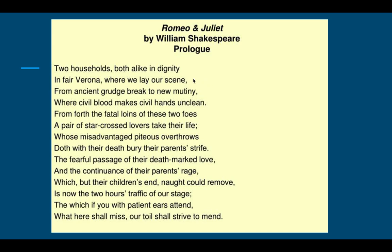'In fair Verona where we lay our scene' — there's the reference to the setting. 'Fair' in this case means lovely, beautiful, and that's the city. 'From ancient grudge break to new mutiny' — an ancient grudge is an old disagreement, a feeling of ill will toward someone that goes on for a long time. So we get the feeling these two families have been fighting for a very long time, and with grudges they may not even know why the feud started. A mutiny can mean any kind of rebellion.